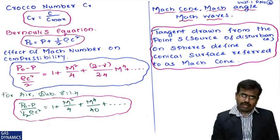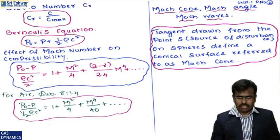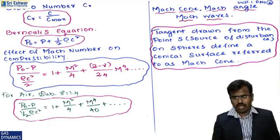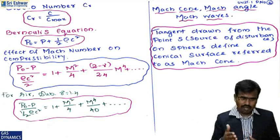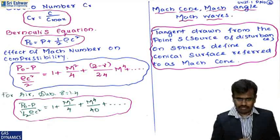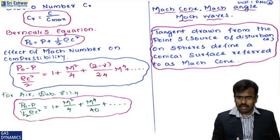Crocco number is given by Cr = c/c_max, where c is fluid velocity and c_max is the maximum possible fluid velocity. Bernoulli's equation gives: p₀ = p + ½ρc². One important derivation is the effect of Mach number on compressibility, with the final equation: (p₀ − p)/(ρc²/2) = 1 + M²/4 + [(2−γ)/24]·M⁴. The Mach cone is defined by a conical surface formed by tangents drawn from point source S on spheres.